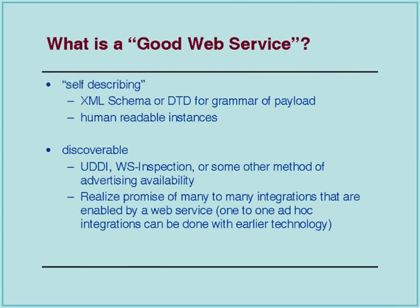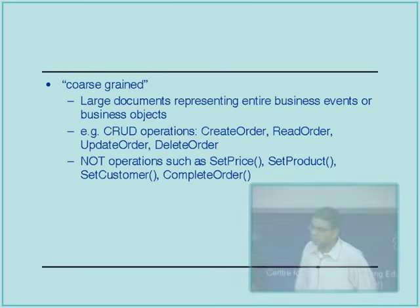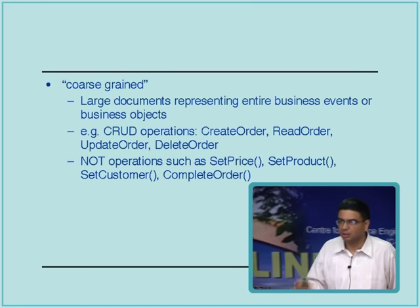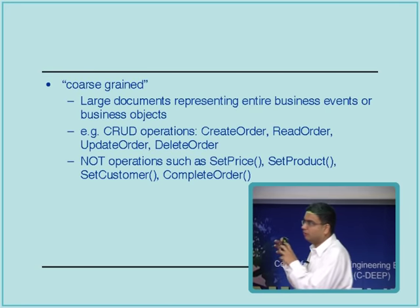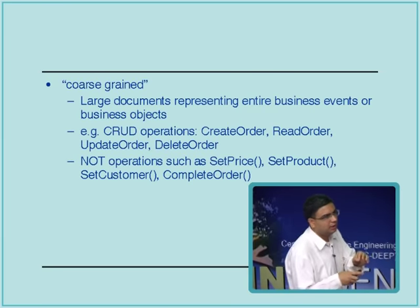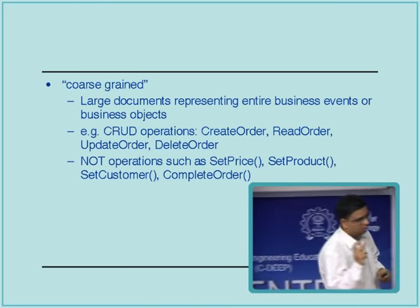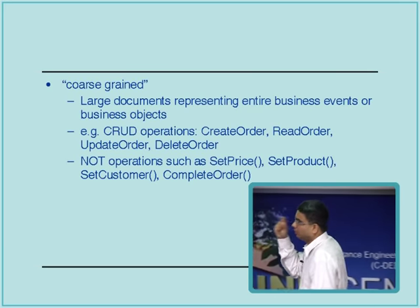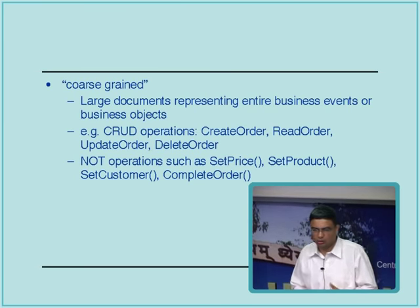It has to be discoverable — there must be some way of advertising the availability of this service. It also has to be coarse-grained. The CRUD operations — create order, read order, update order, delete order — operate at the granularity of an order, not of a specific data item within that order. For example, if I have a shopping cart and have to add a particular item, that may not be a service itself. Set price, set product, set customer — these are all object-oriented type methods.